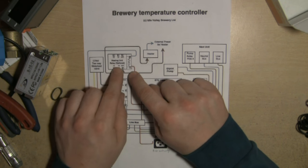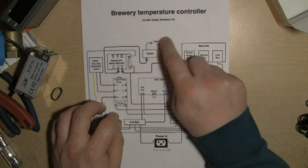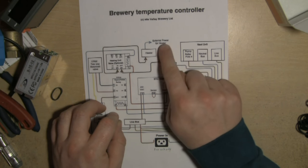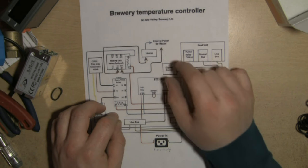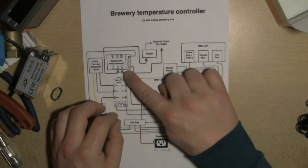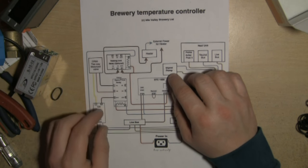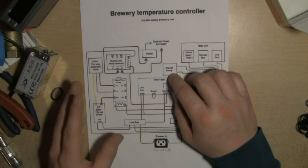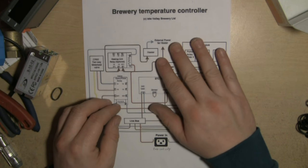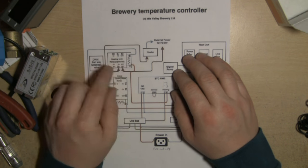The heating relay on the STC activates and it closes these two contacts on the heating unit relay. Once those two contacts are closed, then you can have your external power, your live coming in on the common and on the normally open going back out to your heater.